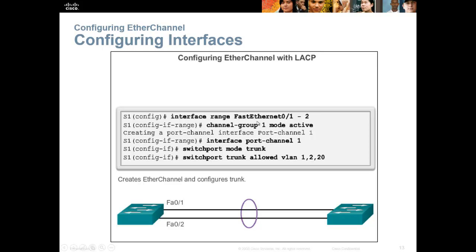To configure: interface range FastEthernet 0/1 - 2, then channel-group 1 mode active. Now both ports are selected. Then channel group, the number of your channel group, the mode — active, passive, on, or off. Once the channel group is done, you go to interface port-channel 1, switchport mode trunk, switchport trunk allowed VLAN 1, 2, and 20. And you're all set. EtherChannel — very easy, and it should be used everywhere.